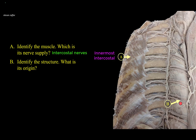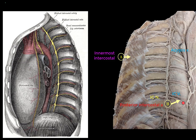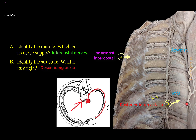B is a posterior intercostal artery; note the posterior intercostal vein above it. The intercostal neurovascular bundle is formed by a vein above, then an artery, then the nerve most inferiorly. The vein drains into the azygos system — here into the azygos vein because it is on the right side. The posterior intercostal arteries — most of them, specifically the lower nine intercostal arteries — are branches of the descending thoracic aorta. The right posterior intercostal arteries must cross the midline, so the right posterior intercostal arteries are longer than the left posterior intercostal arteries.